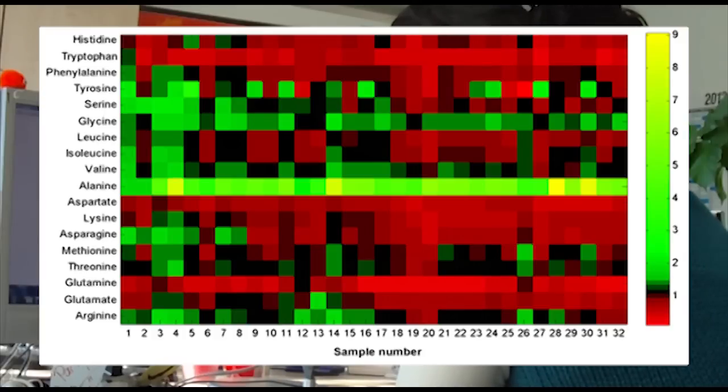As can be seen, this was most pronounced for five amino acids: histidine, tryptophan, lysine, aspartate and glutamine.